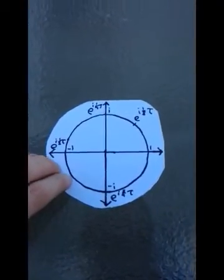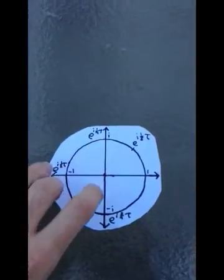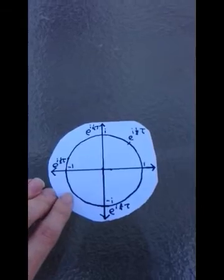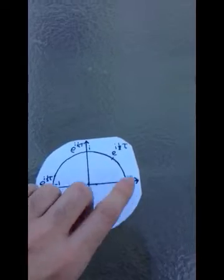Take a look at this graph. It's a complex plane showing the numbers 1, -1, i, and -i. If you want to know, say, e^(iτ), you just take the circle and go all the way around.